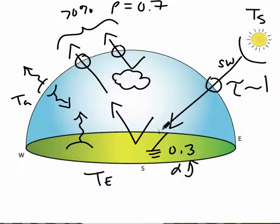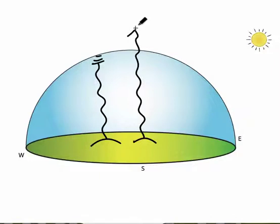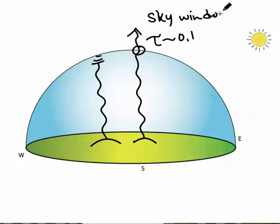However, the Earth itself is going to be emitting this longwave light, and a large part of that longwave light is going to be absorbed by the atmosphere. Some of that light emitted by the Earth is going to make its way through the atmosphere, and it's going to have a very low transparency, approximately 0.1. But some of that makes its way out through what we call the sky window, or the atmospheric window.